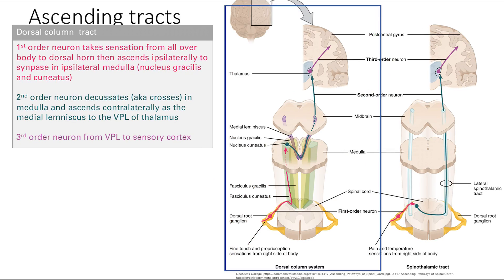Let's talk about ascending tracts, focusing on the dorsal column tracts. Sensation from the body travels via sensory nerves toward the spinal cord, entering the dorsal horn — dorsal horn is for sensation, anterior horn is for motor. These nerves go up ipsilaterally, on the same side, all the way up to the medulla, where they have their first synapse. So they travel a long way — all the way up from the spinal cord to the brainstem before synapsing.